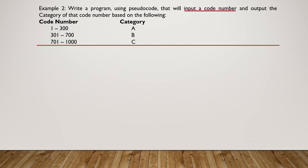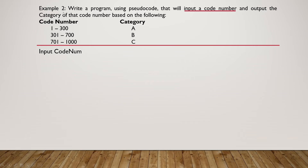Working out with logical operators. Example 2: Write a program using pseudocode that will input a code number and output the category of that code number. Code number 1 to 300 is category A, 301 to 700 is category B, and 701 to 1000 is category C. We decompose the problem — first, we input a code number: INPUT code_number.